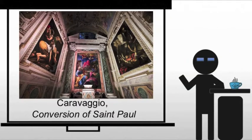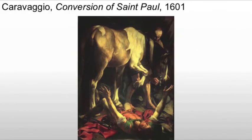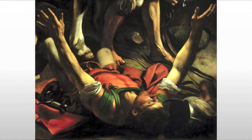Caravaggio's Conversion of St. Paul, which you see here on the right, is a massive painting showing a very important story from early Christianity. What Caravaggio has done is he has depicted the saint flat on his back, arms flailing while a hostler cares for the horse with little concern to the fallen. The situation could easily be a stable accident, lacking the devotional elegance that had been characteristic of the Renaissance and earlier Baroque work.